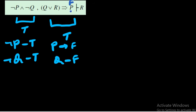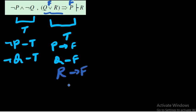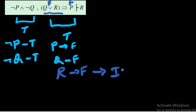Since q is false, and (q∨r)→p is a premise taken as true, and p is false, the antecedent q∨r must be false to keep the conditional true. This means r must also be false. Therefore the conclusion r is false, making the argument invalid.